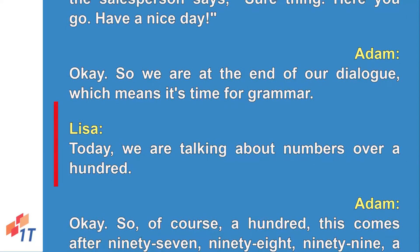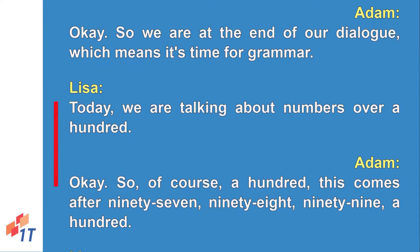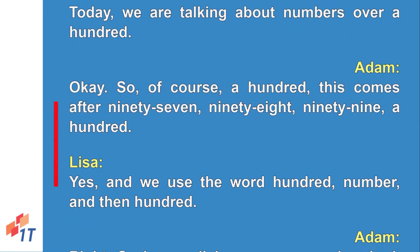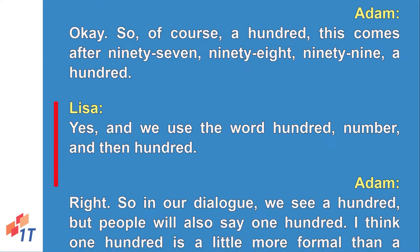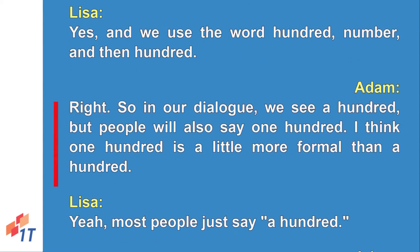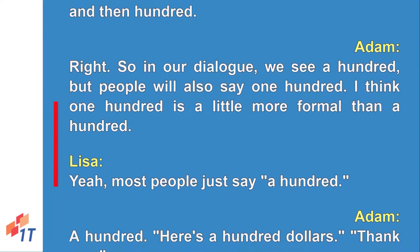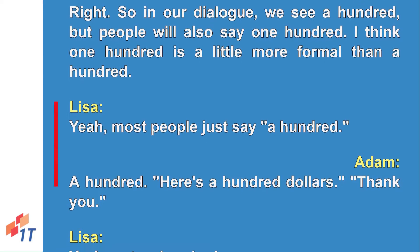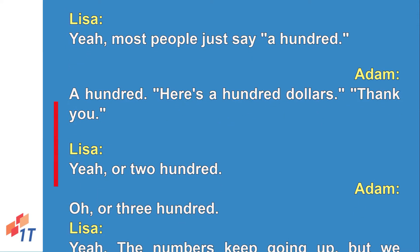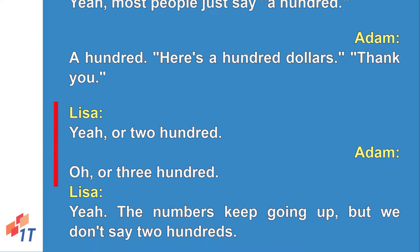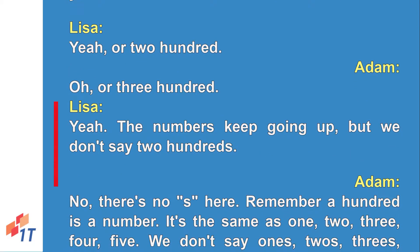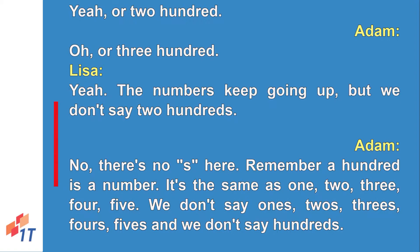Today's grammar point is numbers over a hundred. A hundred comes after 97, 98, 99, a hundred. We use the word 'hundred': number and then 'hundred.' In our dialogue we see 'a hundred,' but people also say 'one hundred' — one hundred is a little more formal. Most people just say 'a hundred,' 'two hundred,' 'three hundred' — but we do not say 'two hundreds.' There is no S.